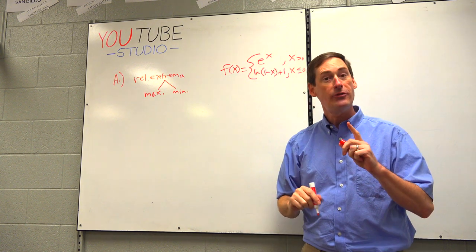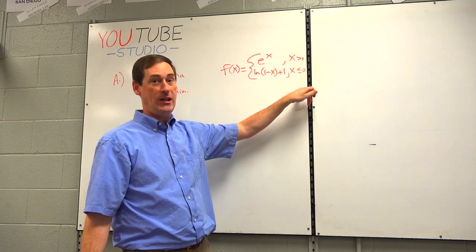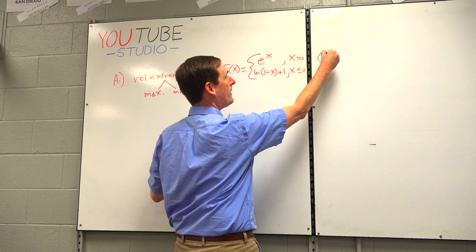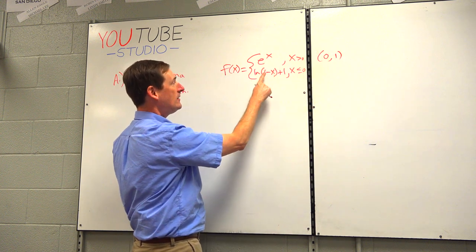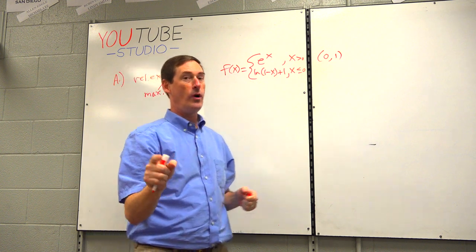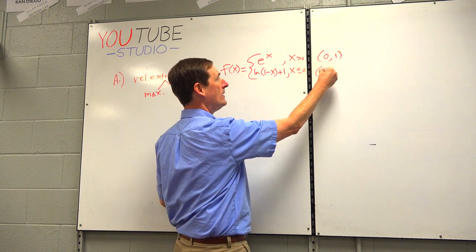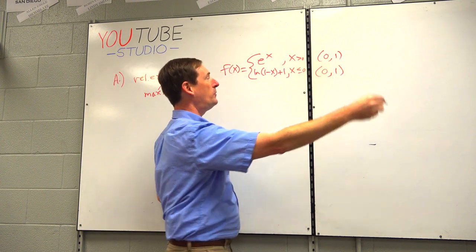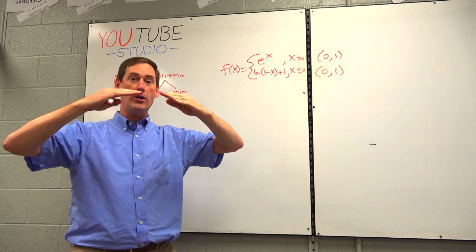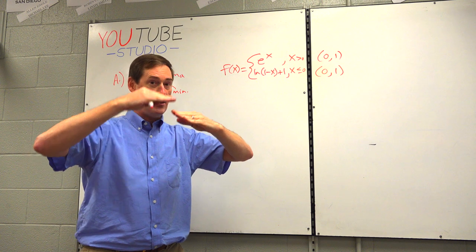So we've got a piecewise function today. Now a wise man once said, plug in the phase change first. The phase change is 0. e to the 0 is 1. And natural log of 1 minus 0 is the natural log of 1. The natural log of 1 is 0. 0 plus 1 is 1. So input 0, output 1 — it's a match. So these two curves are connected. They might be a crooked fit or a smooth fit, but they are connected. They're not a jump.